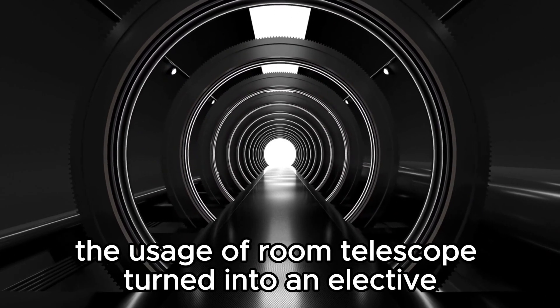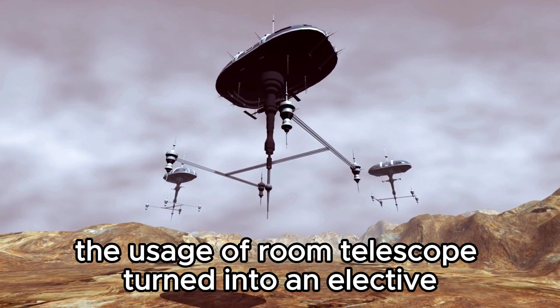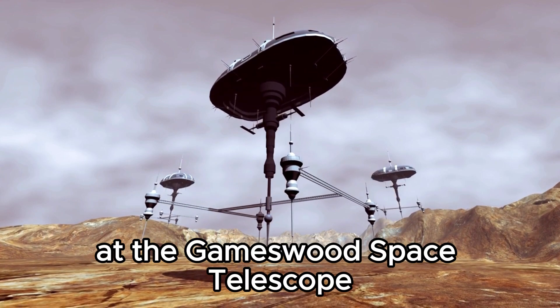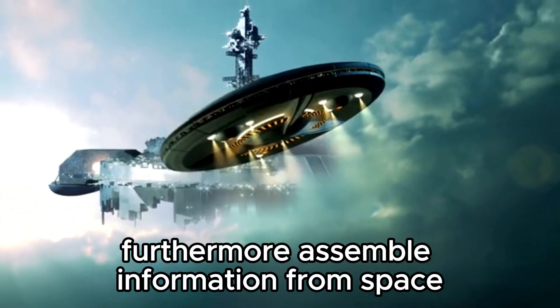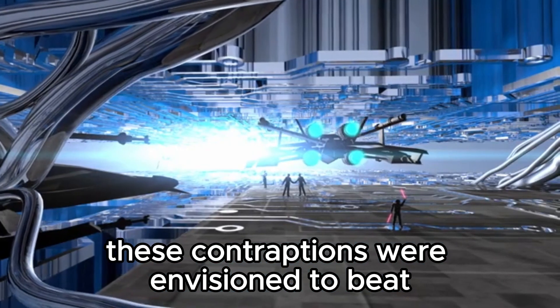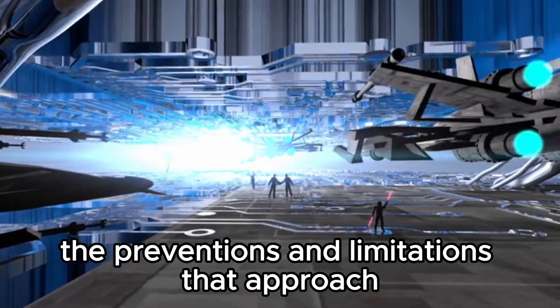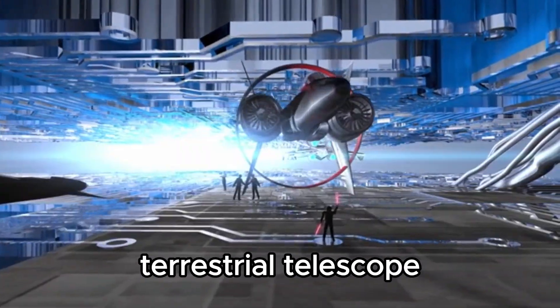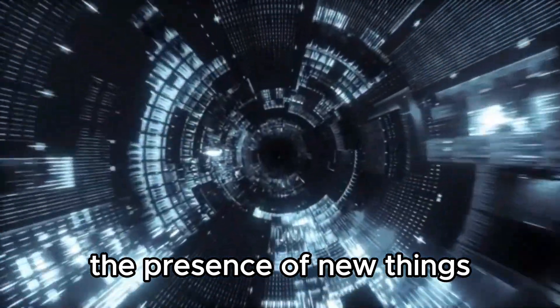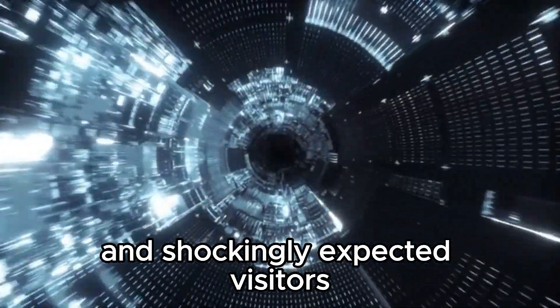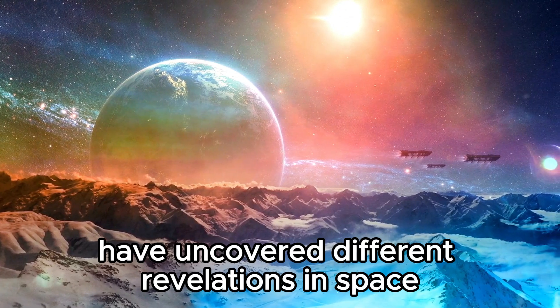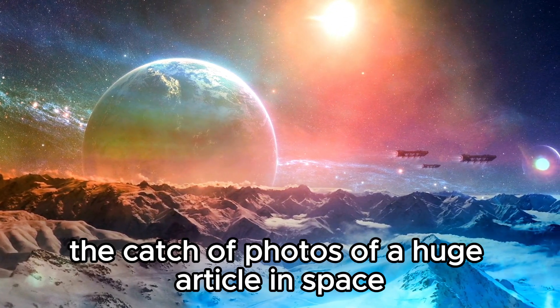Its proximity to Earth, combined with its potential habitability, has driven experts to speculate about the probability of Proxima B harboring alien life forms. The confirmation of Proxima B was made possible through the innovative use of the radial velocity method, a pioneering technique in the field of exoplanet discovery.